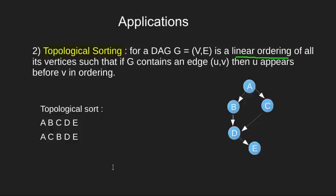For the given graph, if we start from vertex A we can have two possible ordering as written here.